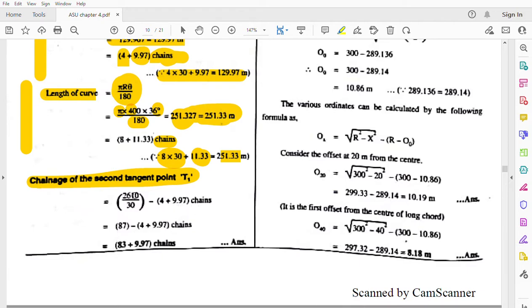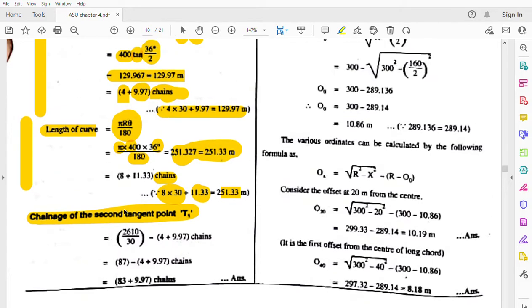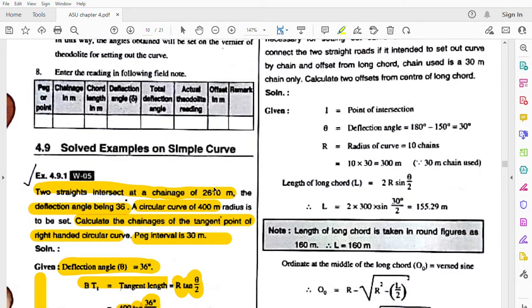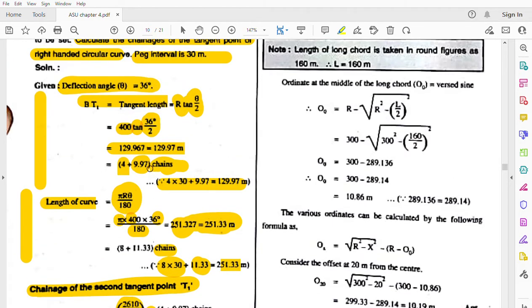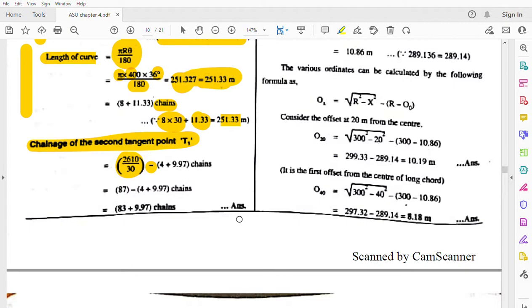Next, chainage of the second tangent point - we have to find this. See, the first chainage is given as 2610 meters. We'll convert this to chains by dividing by 30, giving 87 minus 4 plus 9.97 chains.